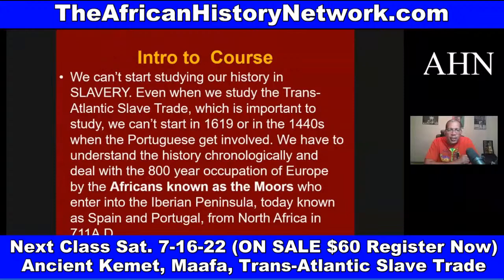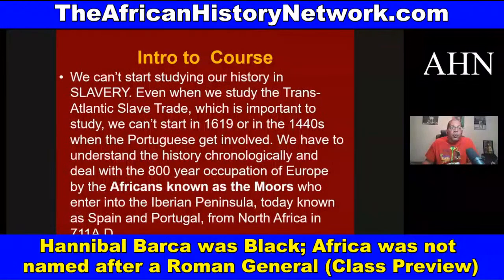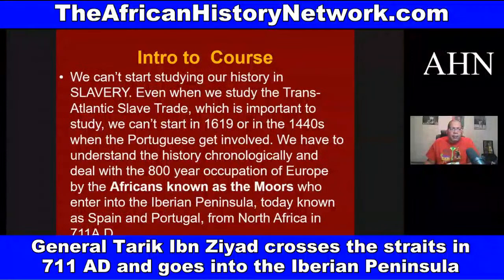We have to understand the history chronologically and deal with the 800-year occupation of Europe by the Africans known as the Moors, who entered into the Iberian Peninsula — today known as Spain and Portugal — from North Africa in 711 AD, led by Tariq ibn Ziyad. They took the teachings from the Nile Valley region of Africa into Europe, and it was those teachings that brought Europe out of the dark ages. Europe was cast into the dark ages when the Western portion of the Roman Empire was crushed by the Vandals and the Visigoths in 476 AD.